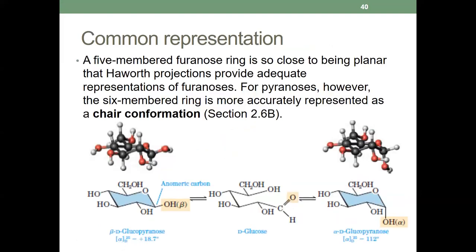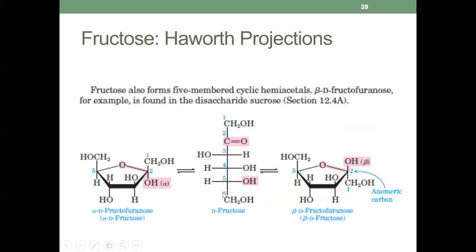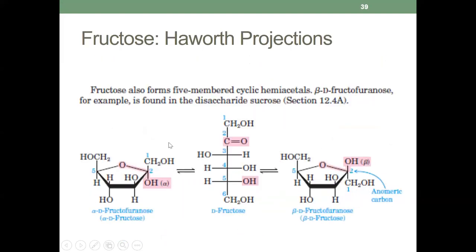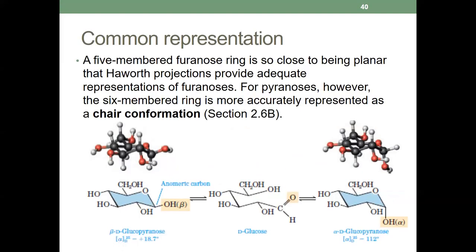Common representations of five-membered furanose rings: these rings are so close to being planar that Haworth projections provide adequate representations. So if you have a pentagon or hexagonal ring drawn flat, that's a Haworth projection. For five-membered rings, the Haworth projection is sufficient to project our cyclic monosaccharides.